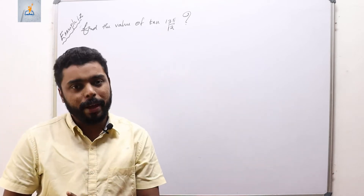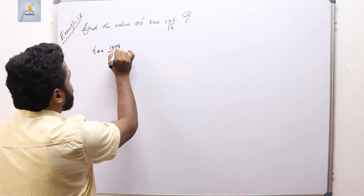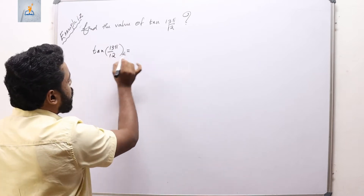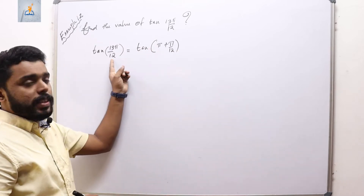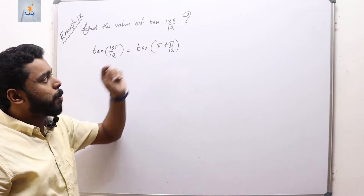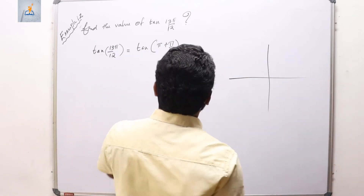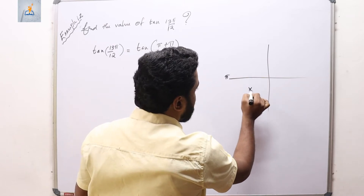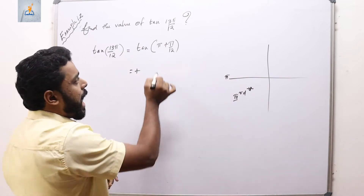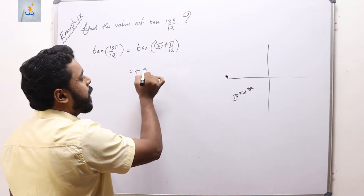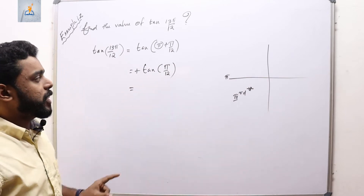Example 12: find the value of tan(13π/12). tan(13π/12) can be split as tan(π + π/12). Using the quadrant trick, π + π/12 lies in the third quadrant where tan is positive, and since the sum involves an integral multiple of π, the result is tan(π/12).